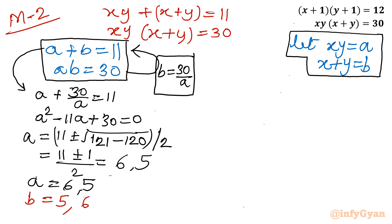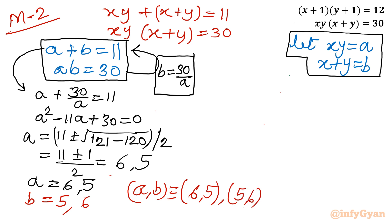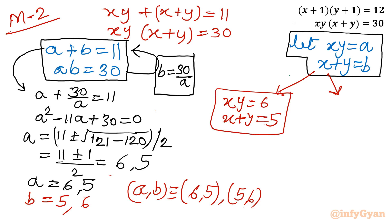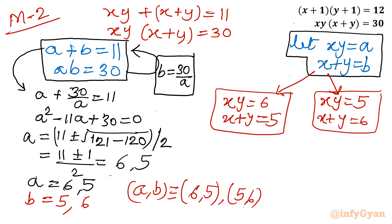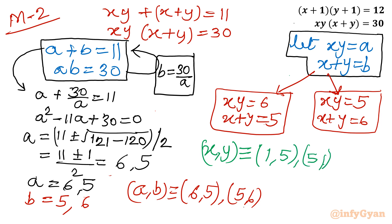Putting these values together: if a = 6 then b = 5, and if a = 5 then b = 6. Since a = xy and b = x+y, this gives us exactly the same two systems as in method 1: xy = 6, x+y = 5 and xy = 5, x+y = 6. We will therefore arrive at the same results. Our final answers are: (x, y) = (1, 5), (5, 1), (2, 3), and (3, 2).